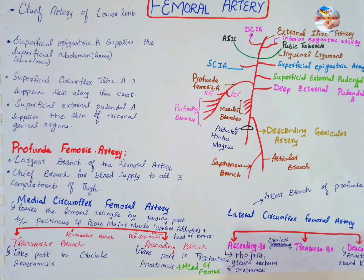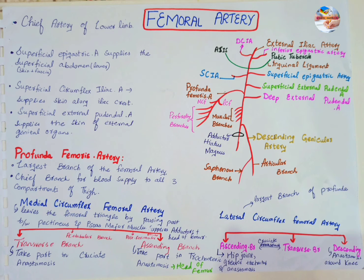The profunda femoris artery arises from the lateral side of the femoral artery about four centimeters below the inguinal ligament. As it descends, it passes posterior to the femoral vessels, leaves the femoral triangle by passing deep to the adductor longus, then passes between the adductor longus and adductor brevis, and then between the adductor longus and adductor magnus. Its terminal part pierces the adductor magnus to anastomose with the upper muscular branch of the popliteal artery.